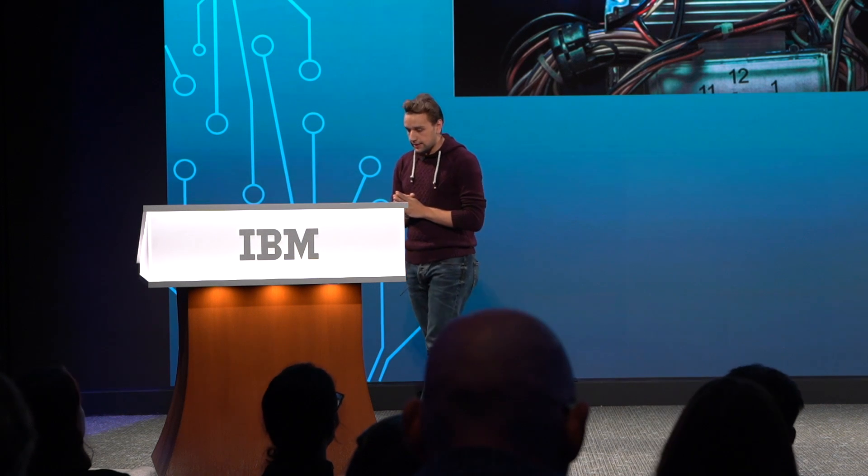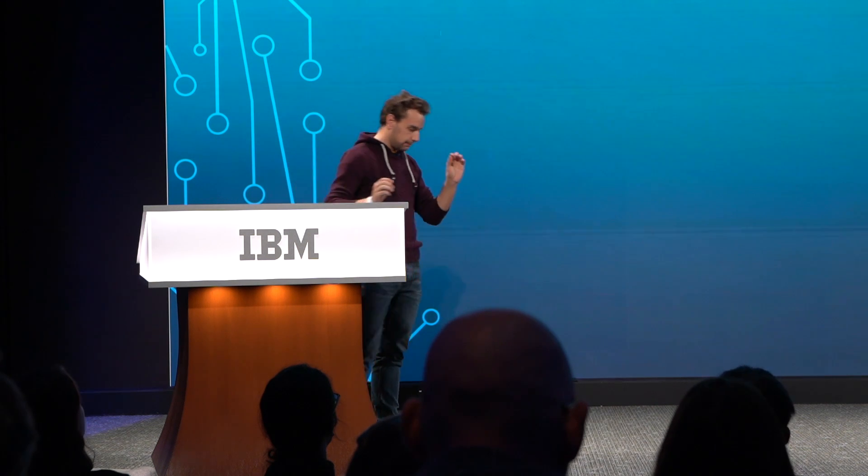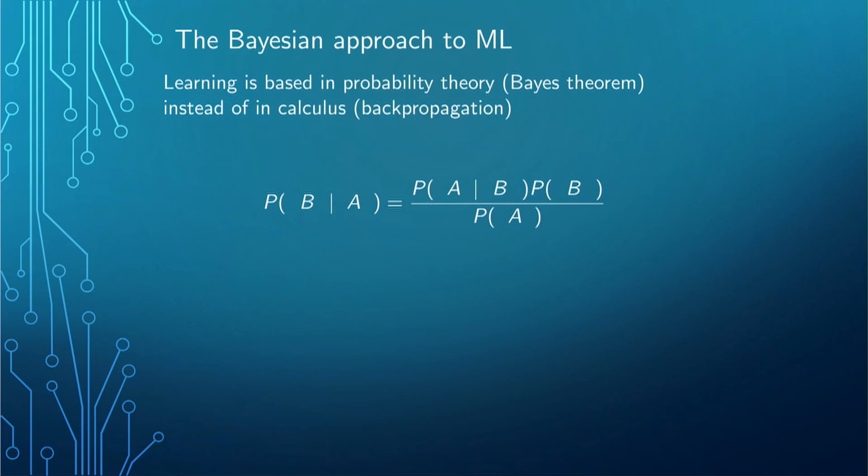It turns out that questions like "how sure is an algorithm about a specific prediction" are very difficult to answer in the standard framework of deep learning. The reason is that deep learning as we know it is mostly based on optimization and calculus, and these questions don't fit that well. In contrast, there are other frameworks in which machine learning operates that have a more natural framework for these sorts of questions — like probability theory.